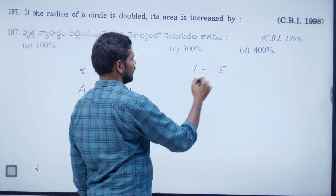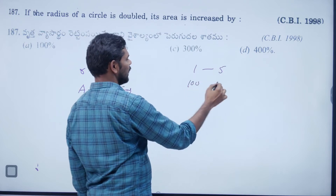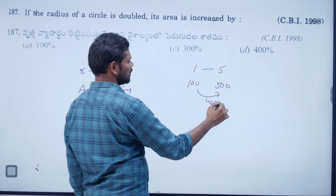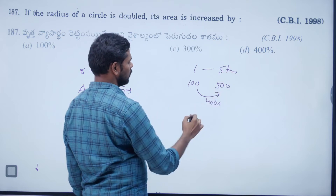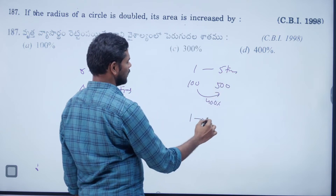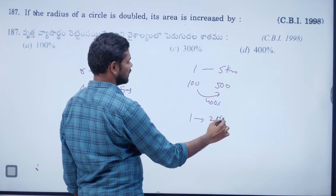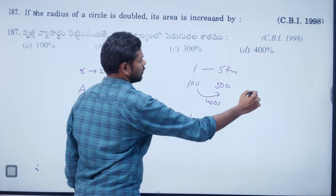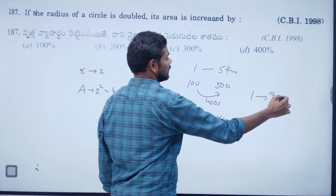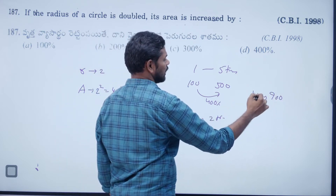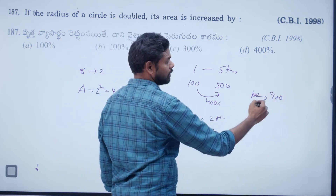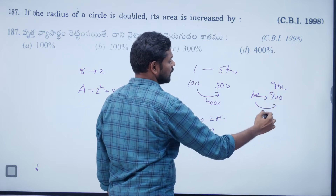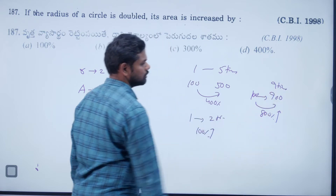If radius becomes 1.5 times (100 to 150, i.e., 500 increase means 5 times), percentage increase is 400%. If radius doubles (2 times), percentage increase is 100%. If radius becomes 9 times (100 to 900), percentage increase is 800%.